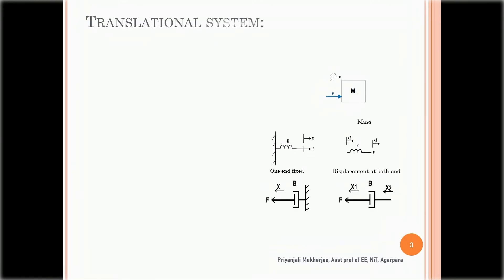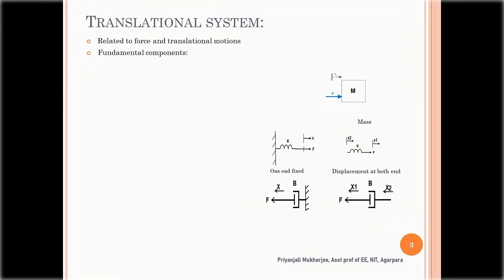Consider the translational systems. The mathematical model consists of a collection of equations describing the behavior of the system. The dynamic behavior is represented by a set of differential equations based on fundamental laws. We apply Newton's law for mechanical systems. Mechanical systems can be classified as translational systems, related to force and translational motion, and rotational systems, related to torque and angular motion.